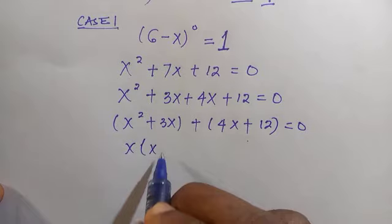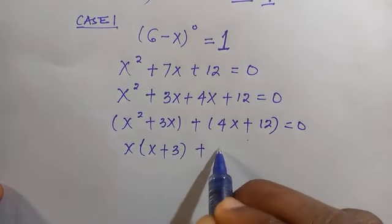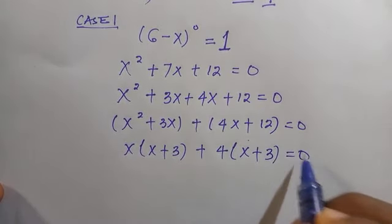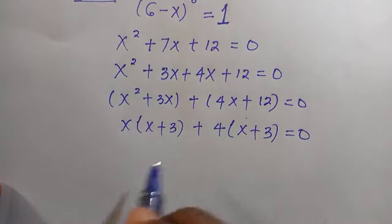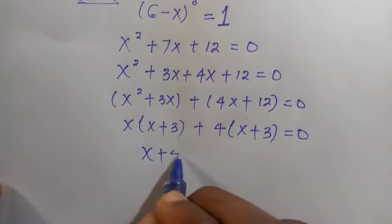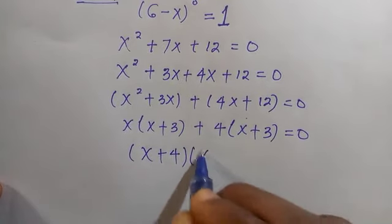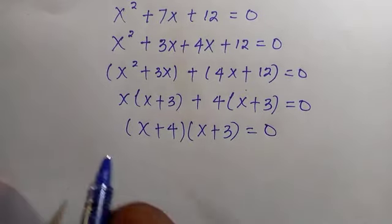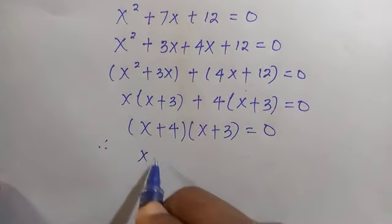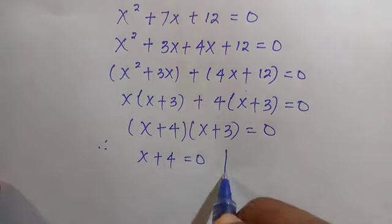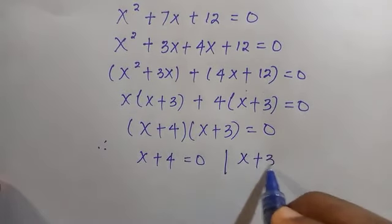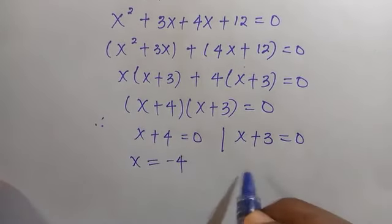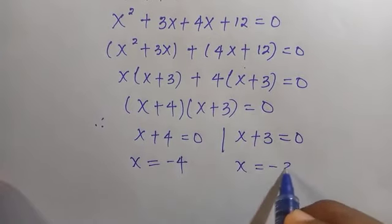For the first group, x is common, so we take it out to get x(x + 3). For the second group, 4 is common, giving 4(x + 3) = 0. Taking (x + 4)(x + 3) = 0, we get x + 4 = 0 or x + 3 = 0, so x = -4 or x = -3.